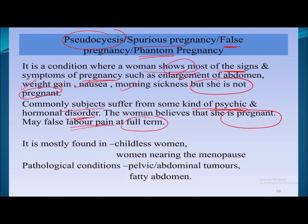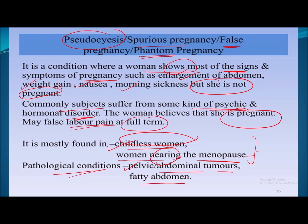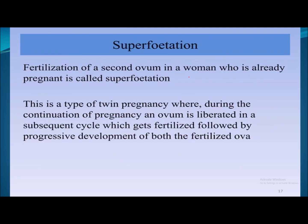Pseudocyesis is commonly seen in childless women or women nearing menopause. The woman believes she is pregnant and may experience false labor pain at full term. It is related to psychic or hormonal disorders. Pathological conditions such as pelvic or abdominal tumors, or fat deposition around the abdomen, may be responsible for the abdominal enlargement in such cases.